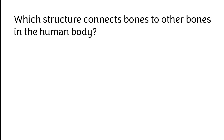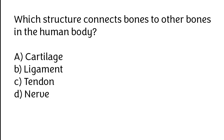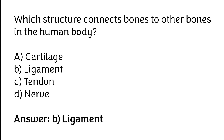Which structure connects bones to other bones in the human body? Cartilage, ligament, tendon, or nerve. The correct answer is option B. Ligament is the structure that connects bone to other bone in the human body.